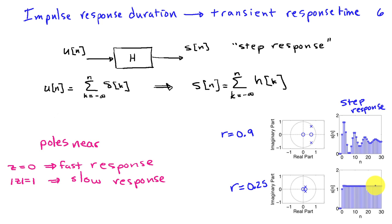Systems with poles near the unit circle generally take longer to respond to transients than systems with poles close to the origin. This is consistent with bandwidth: poles near the unit circle imply a narrow-band system, while poles near the origin imply a broader-band, less resonant frequency response. With broader bandwidth the system can respond faster, so the relationships between impulse response, frequency response, and pole locations are all consistent.